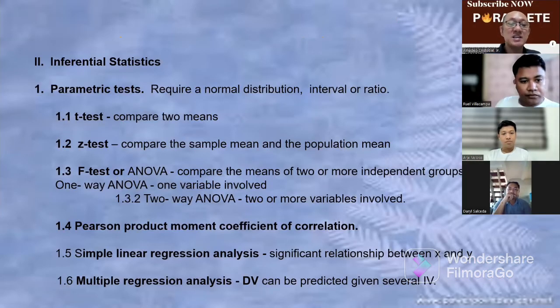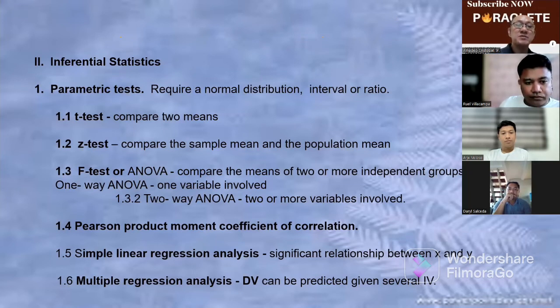You have the parametric test that require normal distribution for interval or ratio data. So nakalagay na dyan. Compare two means, Z test for sample mean and population mean, and so on and so forth.